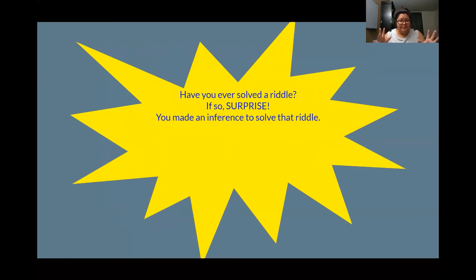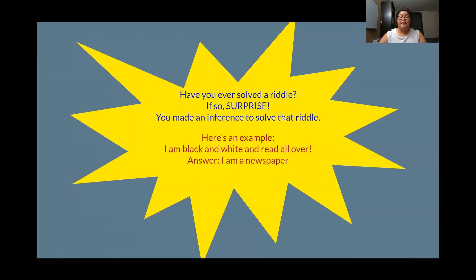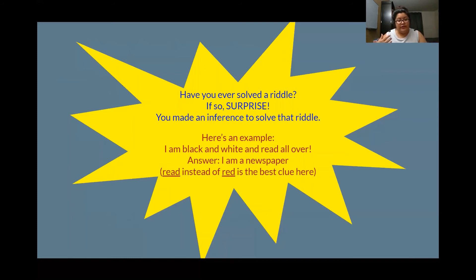Have you ever solved a riddle? You made an inference to solve that riddle. Here's an example: I am black and white and red all over. What do you think it is? The answer is — I am a newspaper. The clue that got us there was the word red with an A — R-E-A-D — because you read a newspaper, instead of the color red.